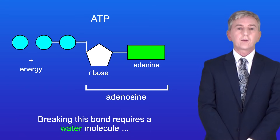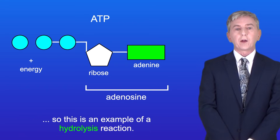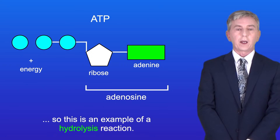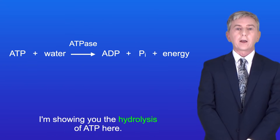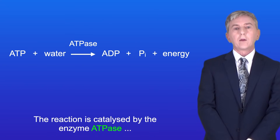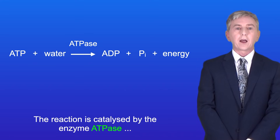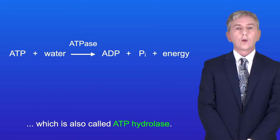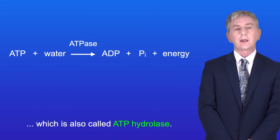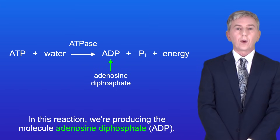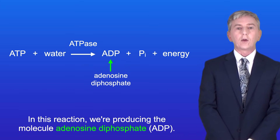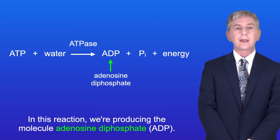Breaking this bond requires a water molecule, so this is an example of a hydrolysis reaction. I'm showing you the hydrolysis of ATP here. The reaction is catalyzed by the enzyme ATPase, which is also called ATP hydrolase. In this reaction we're producing the molecule adenosine diphosphate, or ADP.